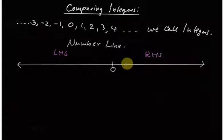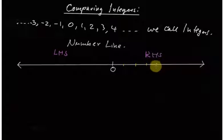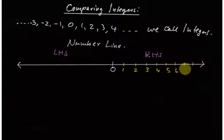We have two parts: left-hand side and right-hand side. We have equal intervals — you can use your ruler to make sure that they are equal. From this point to this point should be equal to this point to this point. On the right-hand side, we write one, two, three, four, five, six, seven, and so on.